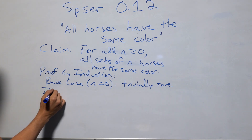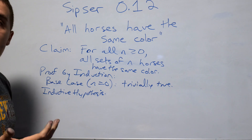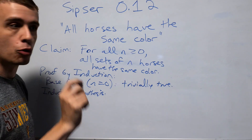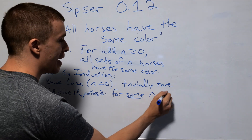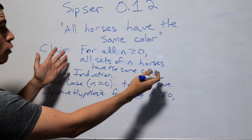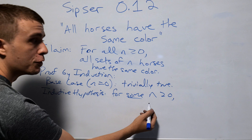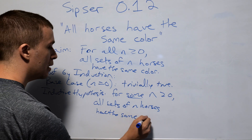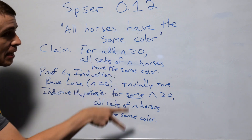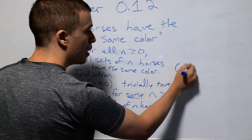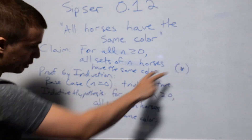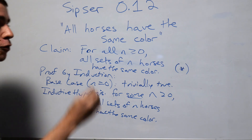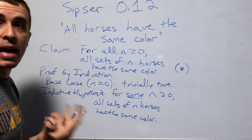Whenever we do an induction proof, we need to talk about the inductive hypothesis. The inductive hypothesis says: if we have some number of horses, we assume the statement is true for a particular choice of n. For some n at least 0 — and it's important that we use 'some' here — all sets of n horses have the same color. Some people put a little asterisk when the claim is repeated, and just reference the asterisk instead of rewriting the whole thing.